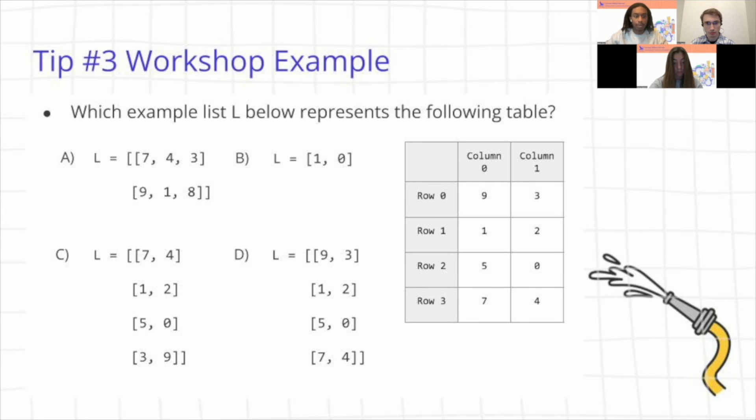And with option B, we can see that we actually only have a one dimensional list present here with elements one and zero present, which doesn't represent our table. Because if you recall, our table does need to fit our two dimensional case of our list here. And option C and D look a lot more like our example here on the table. But if we look at option C, we can see that our row zero doesn't exactly match the row zero present in our table. Row zero is 7, 4 in our option C example, but is 9, 3 in our table. So we can automatically eliminate C, and also upon further inspection, we can see that row three is also incorrect, which is by visualization the fourth row, 3, 9 in our option C, which doesn't match 7, 4 in our table.